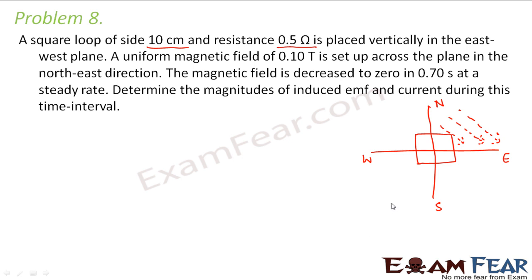Now in this case, the area is not changing, right? So what is changing? The magnetic field is changing. Because it says that the magnetic field is decreased to 0 in 0.70 seconds. That means B is changing. So since B is changing, therefore phi will change, that is flux will change and therefore EMF will be induced.